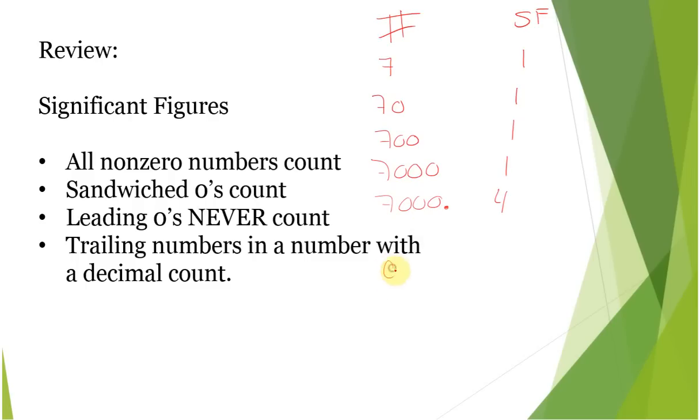If we go in the other direction, 0.7, 0.07, 0.007. This is a leading zero. It doesn't matter that there's a decimal. It's not after a non-zero number. So this number has 1 sig fig. This has 1 sig fig. This guy has leading zeros which don't count and a trailing zero in a number with a decimal that does, so this has got 2.